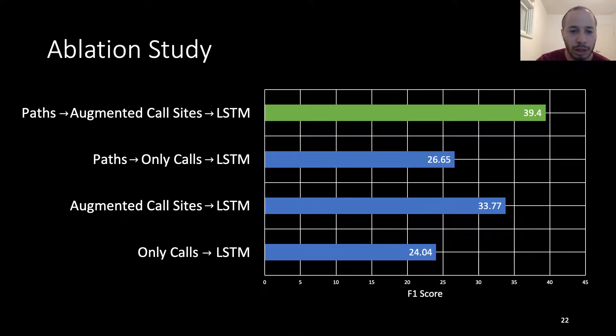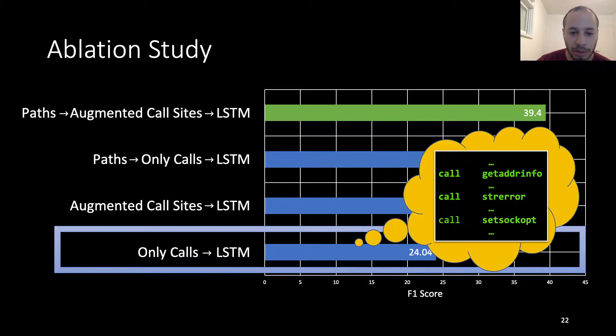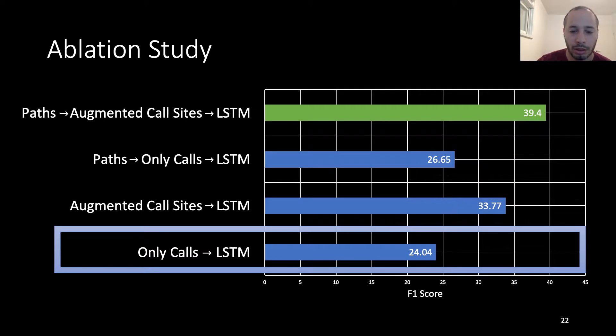We moved to an ablation study, which we used to ascertain a grasp on the different parts of our system and how each one contributes to the final model. First, we only took the first step focusing on the APIs and other calls. As we can see, this result is slightly better than the vanilla ones using just LSTM, but it's still far gone from the final best result.